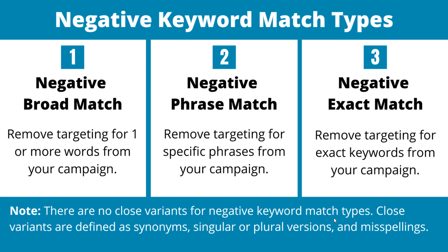Close variants are defined as synonyms, singular or plural versions, and misspellings. So for example if I'm using a negative broad match keyword it's going to remove targeting for that one word or more words from a campaign, and I'm going to show you exactly what I mean by that as I get into the next step.